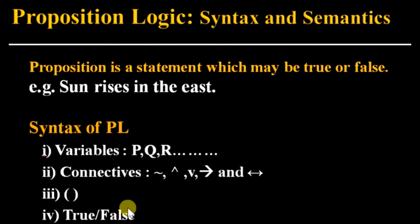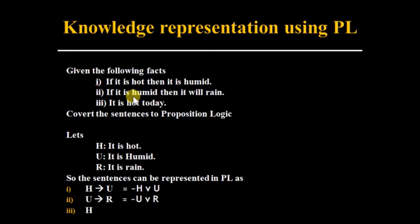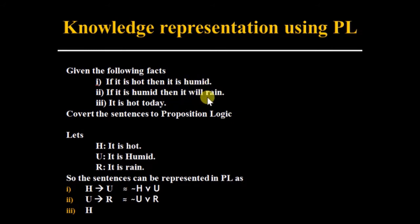We can also use propositional logic to represent knowledge. Let's take an example — the following facts are given and we have to convert these sentences to propositional logic. First, we identify how many unique sentences are available: 'it is hot,' 'it is humid,' and 'it will rain.' So there are three unique sentences, and we declare three different variables to represent them.